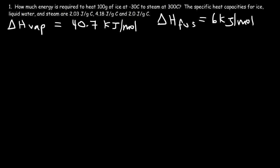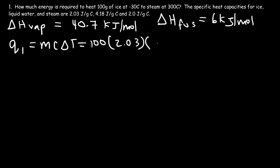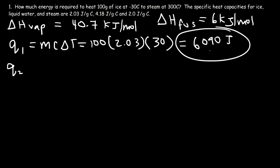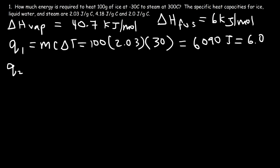Let's calculate Q1 — the energy required to heat up ice from negative 30 degrees Celsius to 0 degrees Celsius. Using MC delta T: the mass is 100, the specific heat capacity for ice is 2.03 joules per gram per Celsius, and the change in temperature is positive 30. So that's 100 times 2.03 times 30, which equals 6,090 joules, or 6.09 kilojoules.